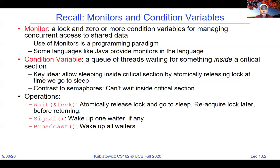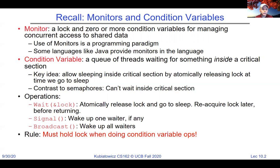A condition variable is a queue of threads waiting for something inside a critical section. The key idea is you allow sleeping inside the critical section by atomically releasing the lock and reacquiring it. This is in contrast to semaphores, where you can't wait inside the critical section. The three main operations are wait, signal, and broadcast.